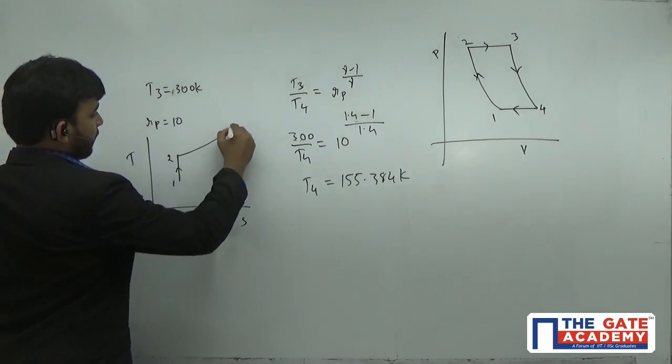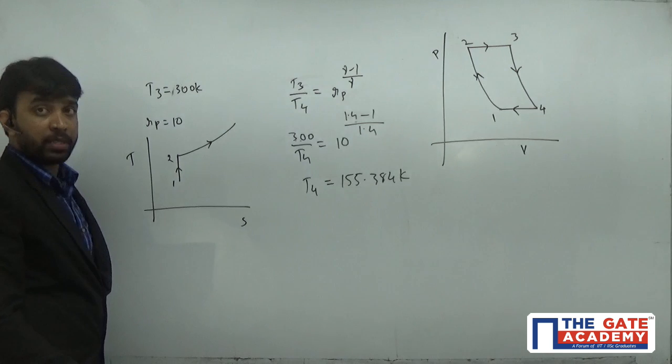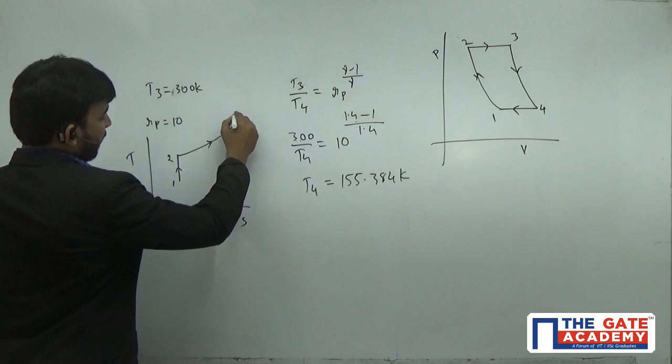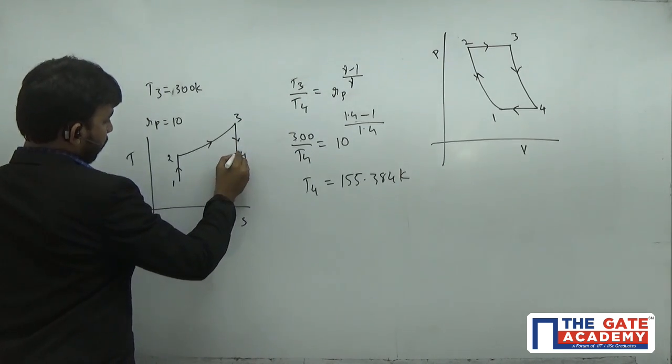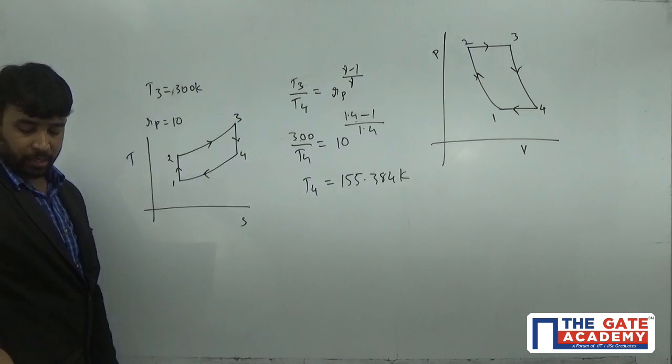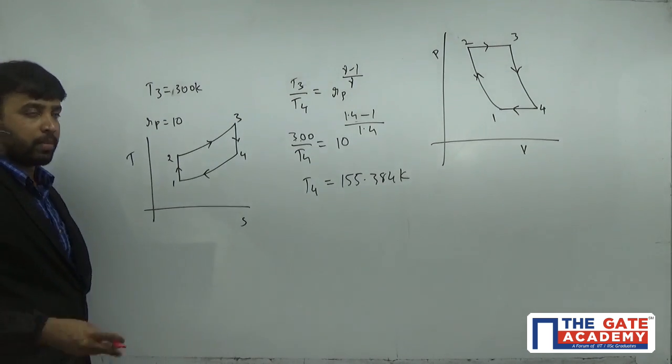2 to 3 is a heat addition process. In a heat addition process, temperature increases and entropy increases. 3 to 4 is an isentropic expansion process, and 4 to 1 is a constant pressure heat rejection process. In a heat rejection process, both temperature and entropy decrease.